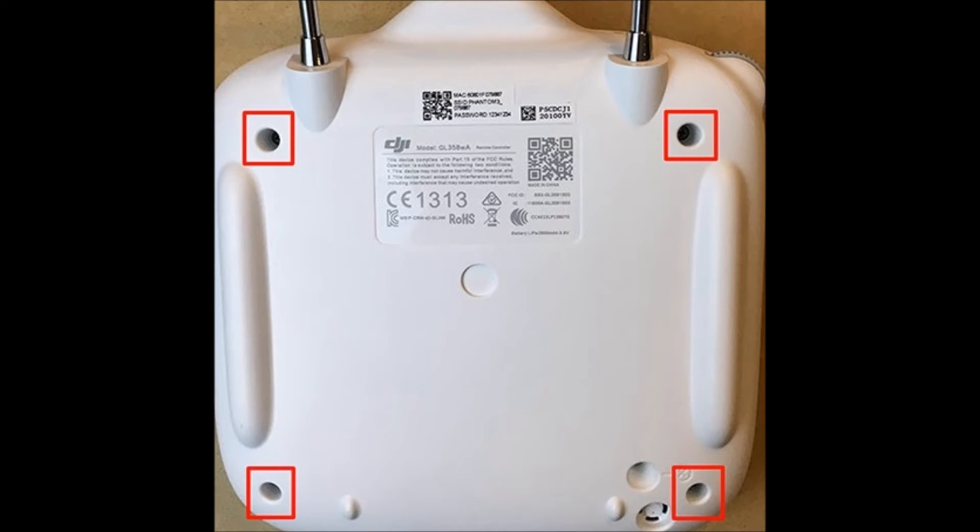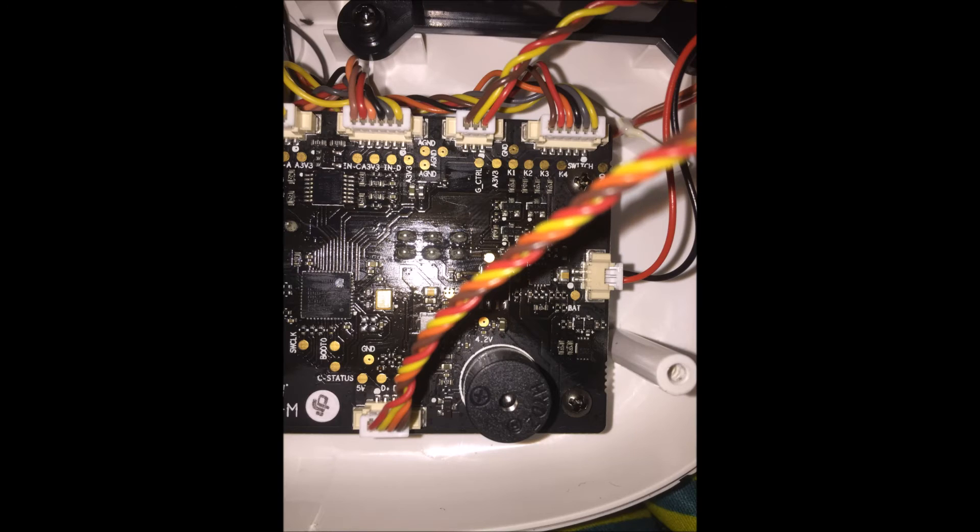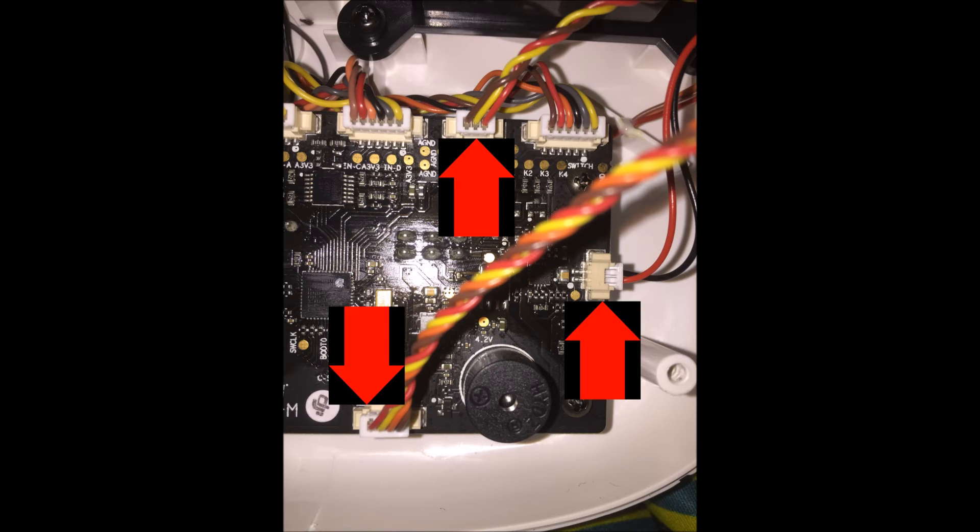So flip over your controller and remove the four screws that are on the back. Be careful when you pop the controller in half as there's a few wiring harnesses that connect the front to the back of the controller. You want to pay attention to the orientation of these, or just rewind this video. Make sure when you put this thing back together that these wires are in this orientation.